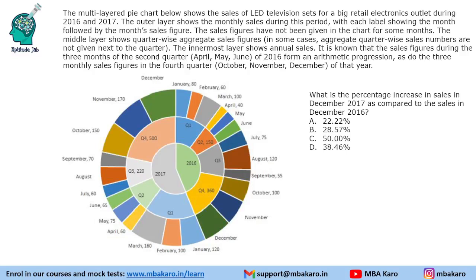Hello everyone, welcome to Aptitude Jab. This set from CAT 2018 slot 1 DILR was based on a multi-layered pie chart. It says that this multi-layered pie chart shows the sales of LED television sets for a big retail electronics outlet during 2016 and 2017.